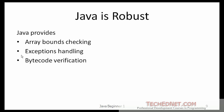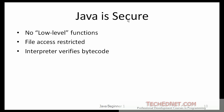Java provides array bounds checking, exception handling, and bytecode verification — all of these features make Java very robust. Java is also a very secure programming language. It does not have any low-level functions, file access can be programmatically restricted, and when you run the code the interpreter verifies the bytecode. These features make Java programs secure.